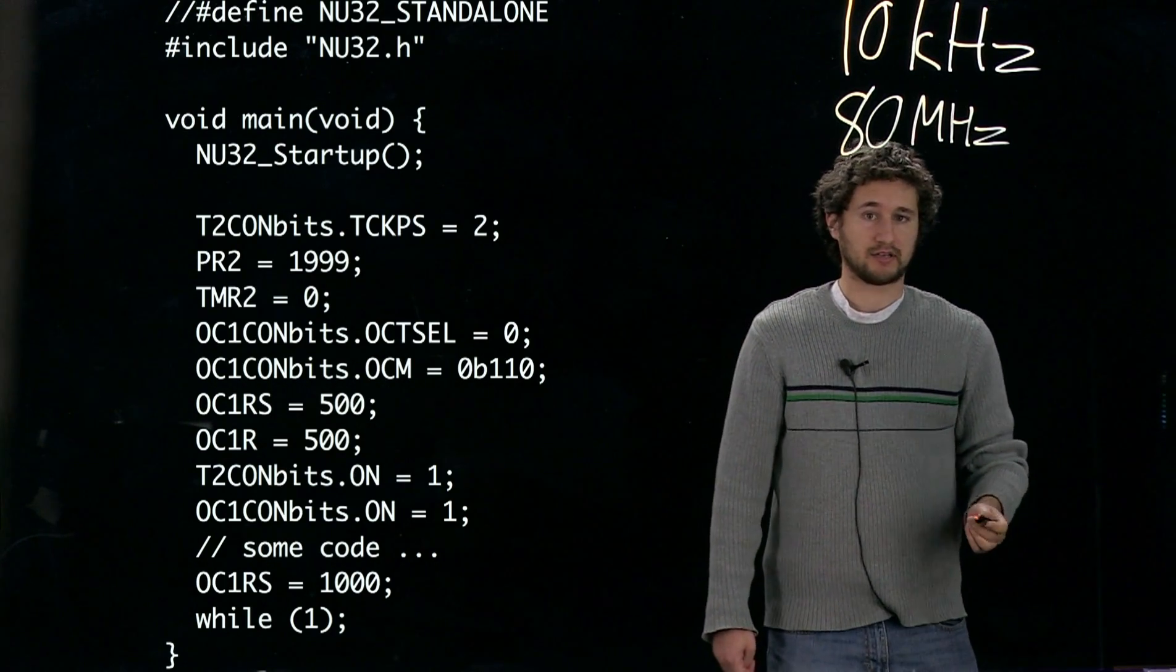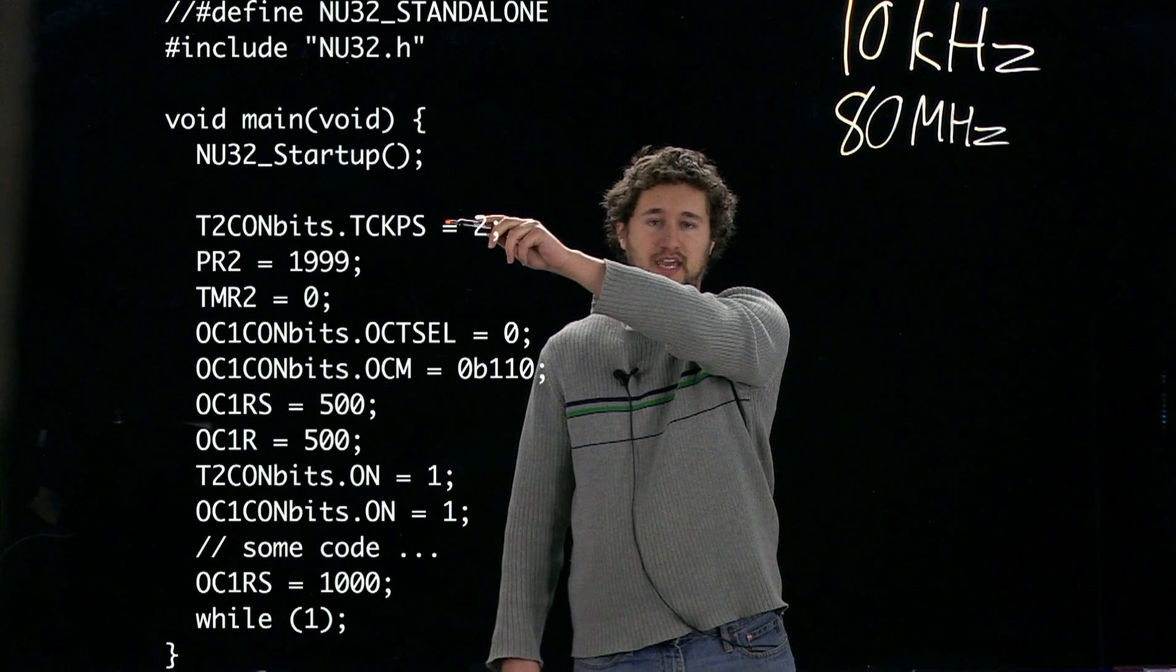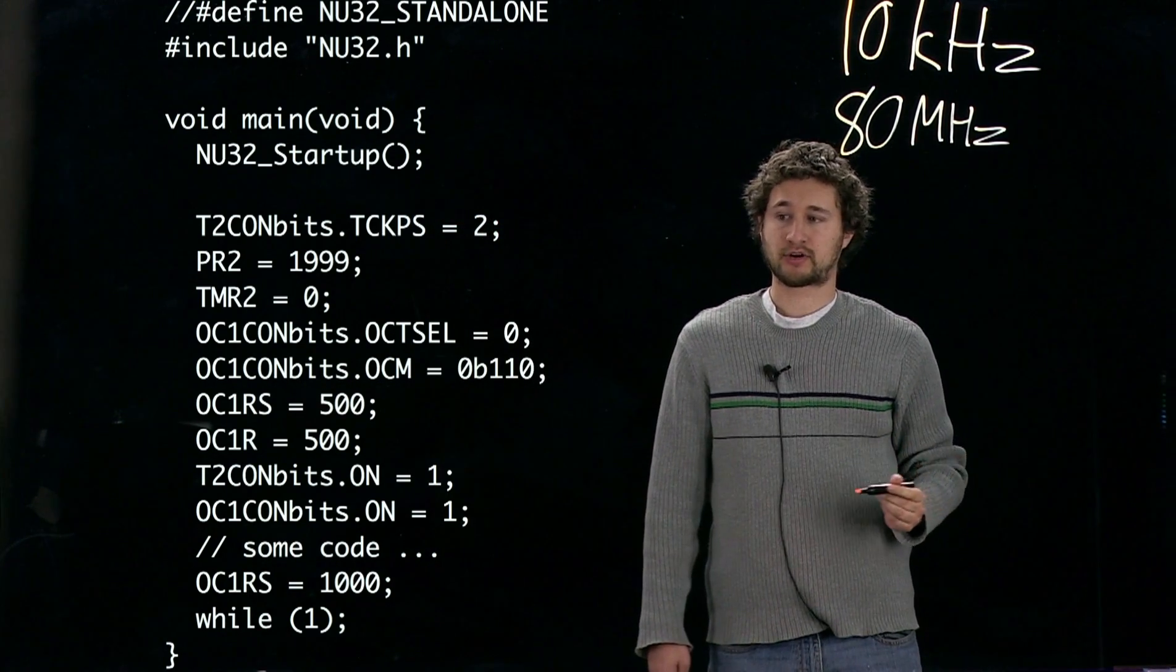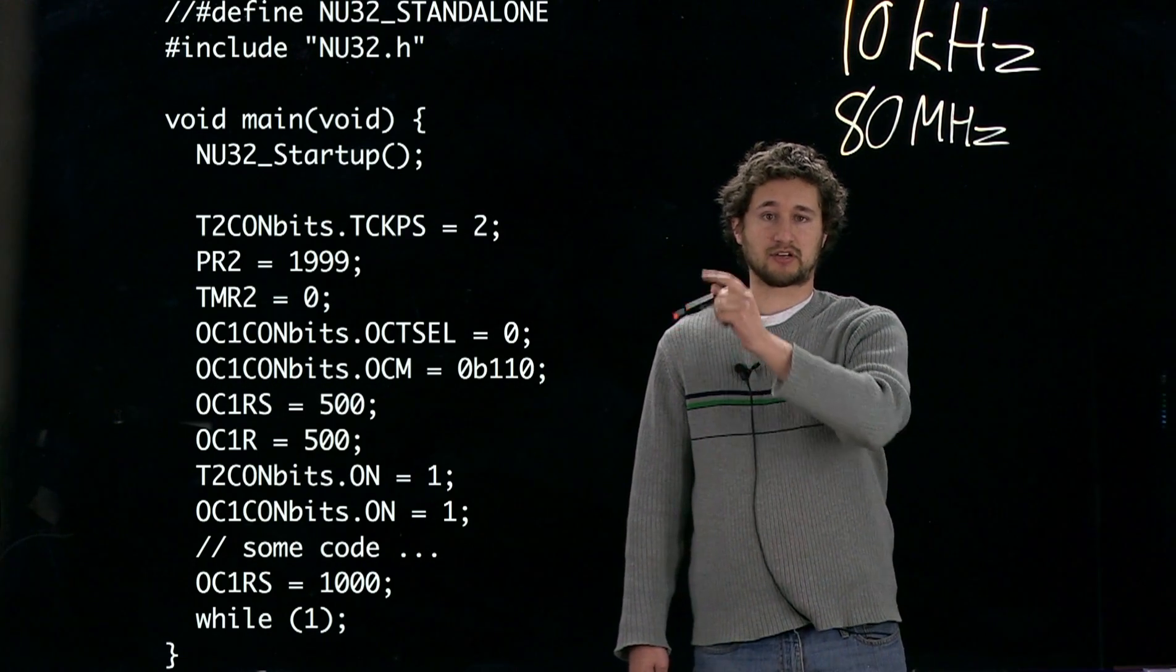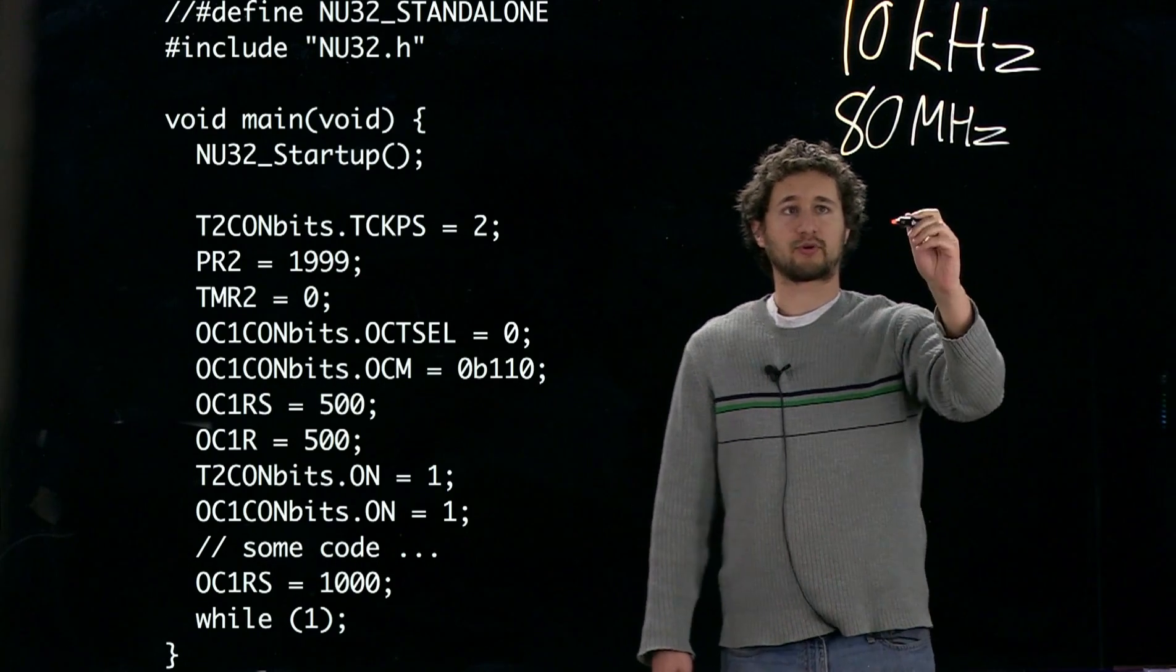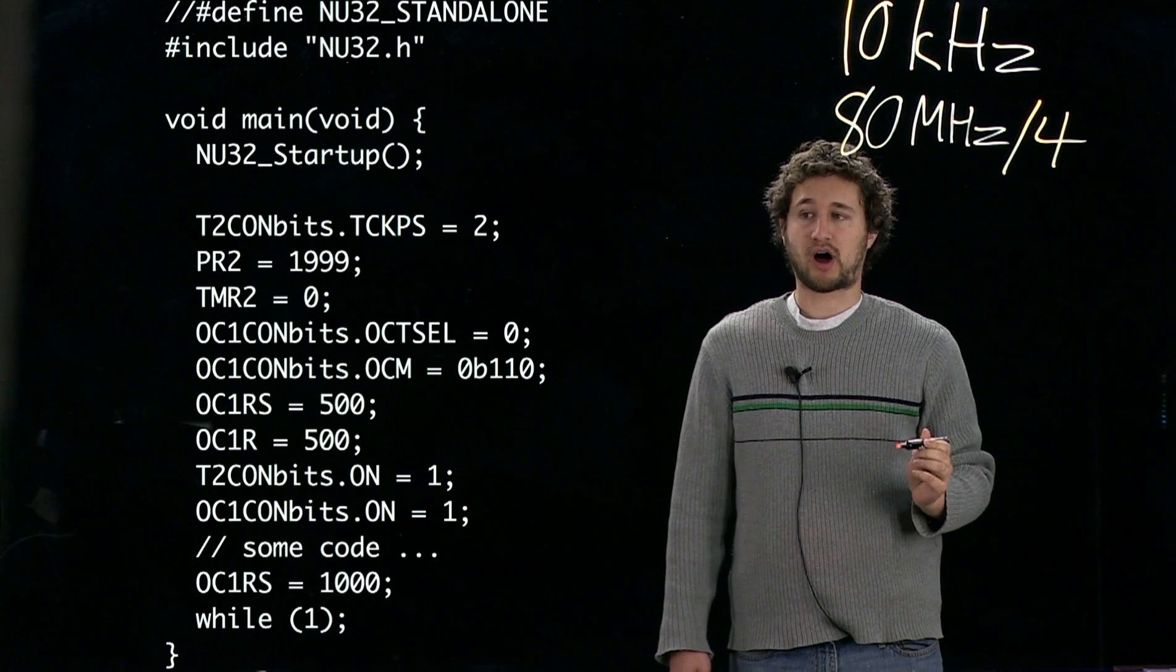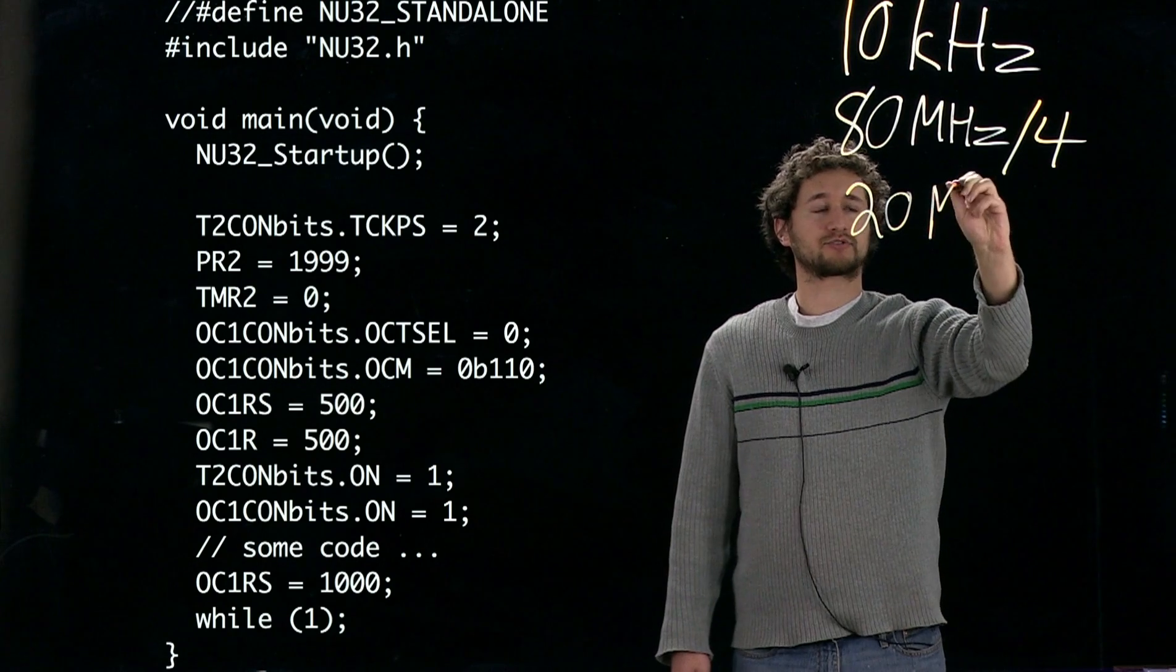The first step is T2ConBits.TCKPS equals 2. This is setting up a pre-scaler on timer 2 to divide the clock. If you look in the data sheet, you'll see that this 2 corresponds to a pre-scaler of 4. So we're going to divide our 80 megahertz by 4 to get the base clock frequency of 20 megahertz.